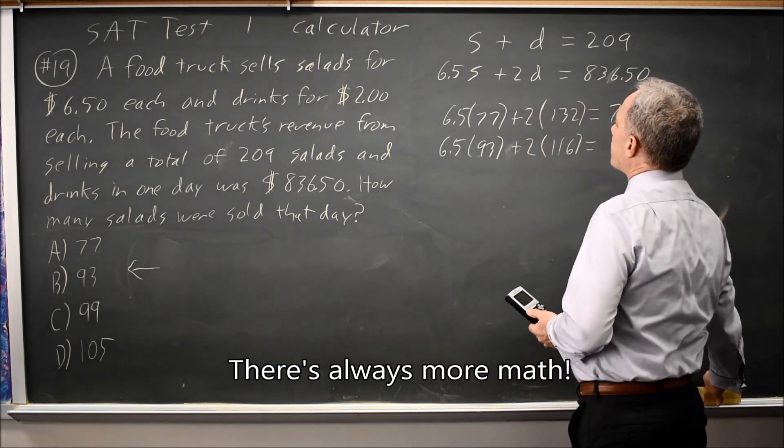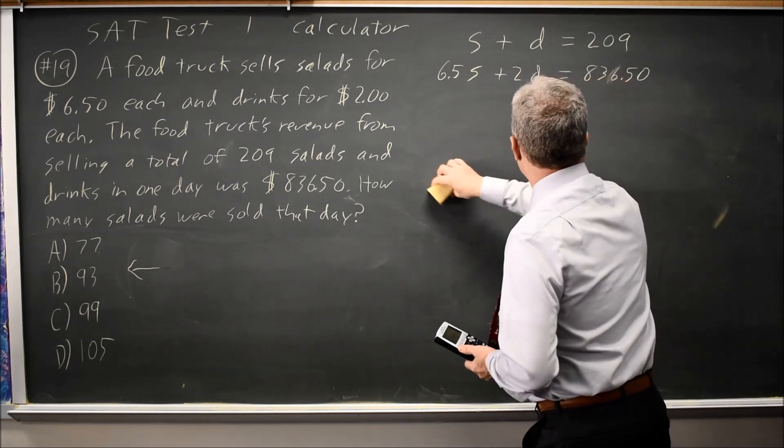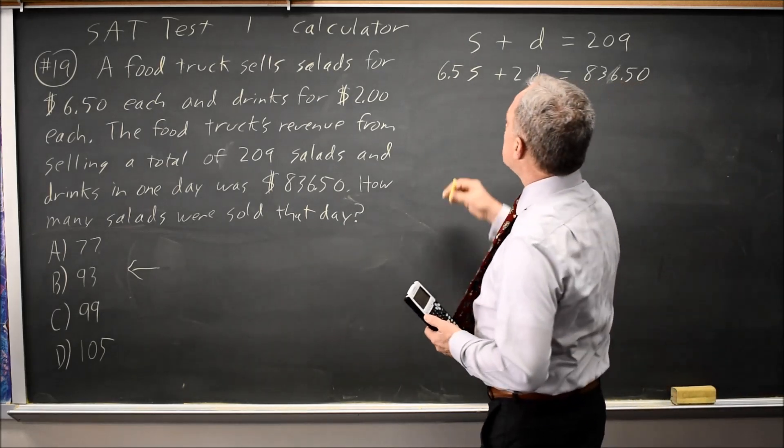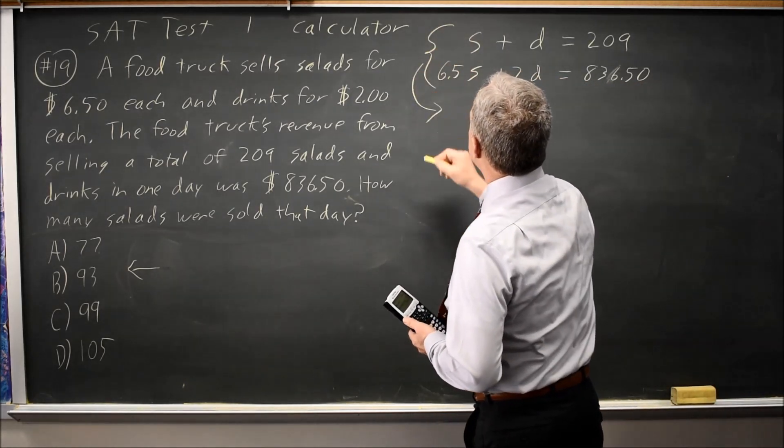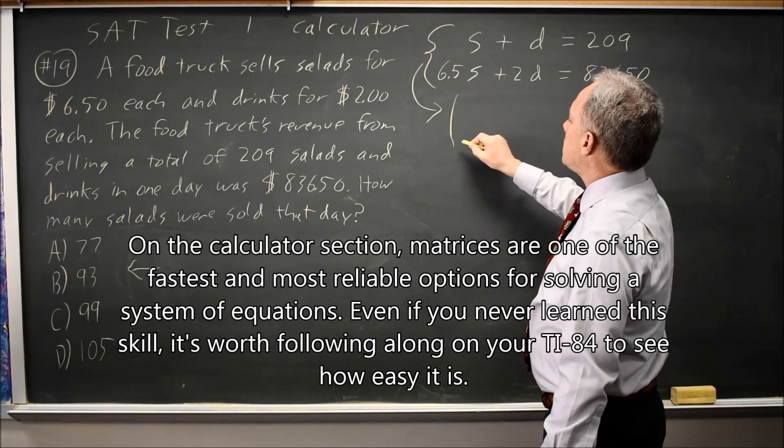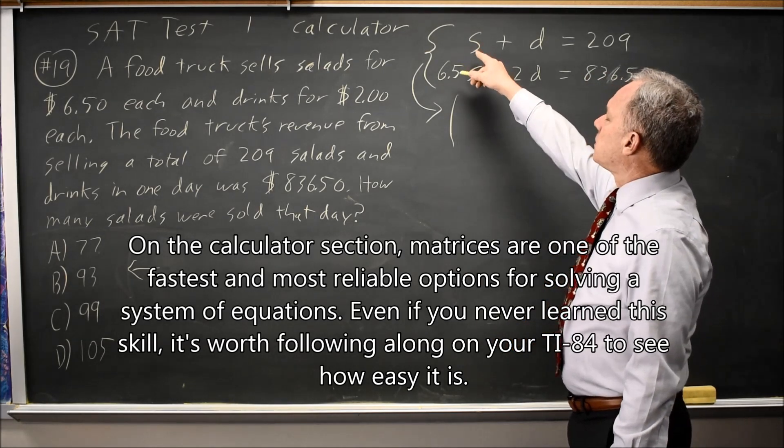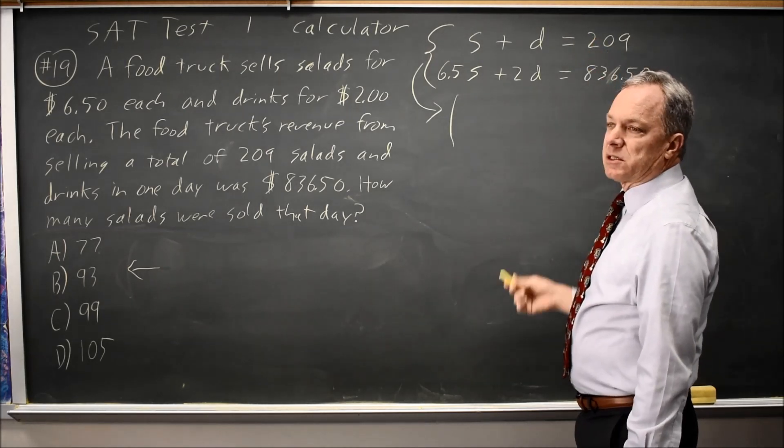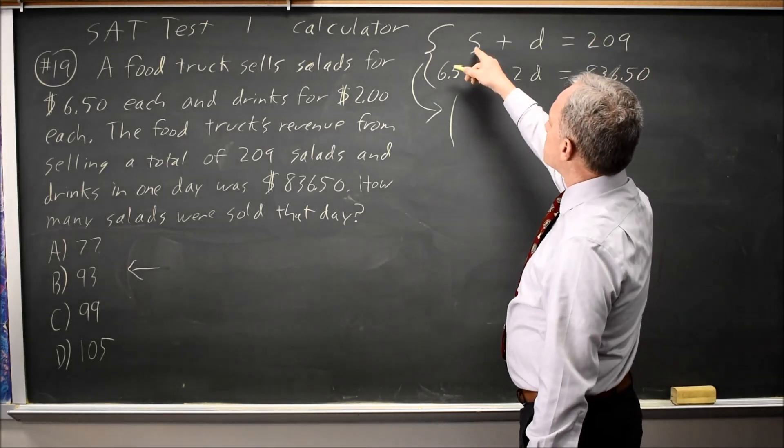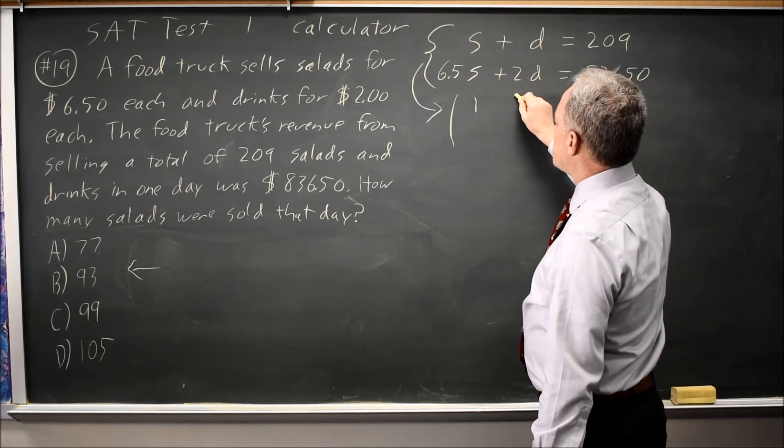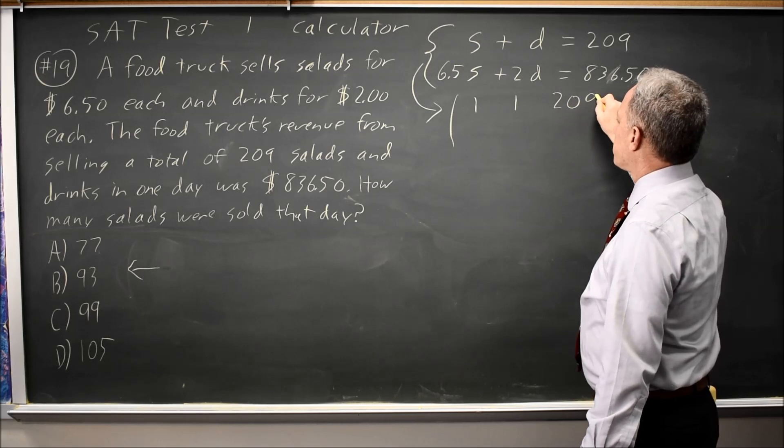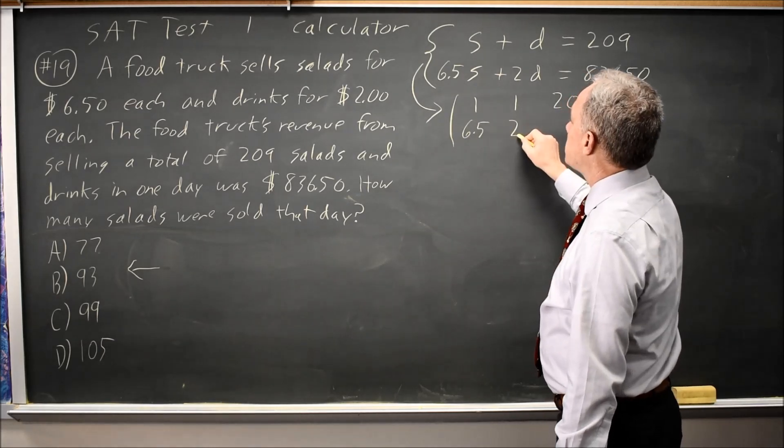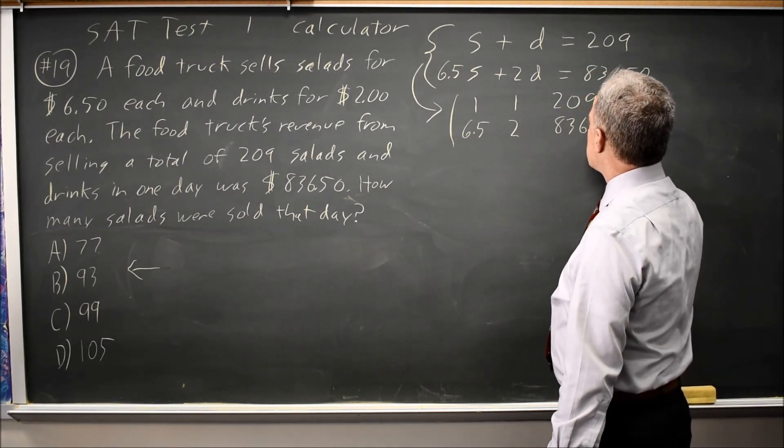But there's more. Again, this is a calculator question, and it is a system of equations. I wrote the system of equations. Let's solve it using matrices on the calculator. You can convert a system into a matrix if you have the variables in the same order on the left-hand side of the equal sign, and then the constant on the right by itself. So this is 1 times S plus 1 times D equals 209. And then 6.5 times S, 2 times D, 836.50.